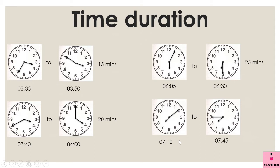Now let us suppose you have to prepare for a test. After coming back from the park, you started studying at 7:10 and finished your studies at 7:45. Let us see how much time did you take. Our minute hand started moving and let us start adding the time: 5, 10, 15, 20, 25, 30, 35. So 35 minutes is the time duration.